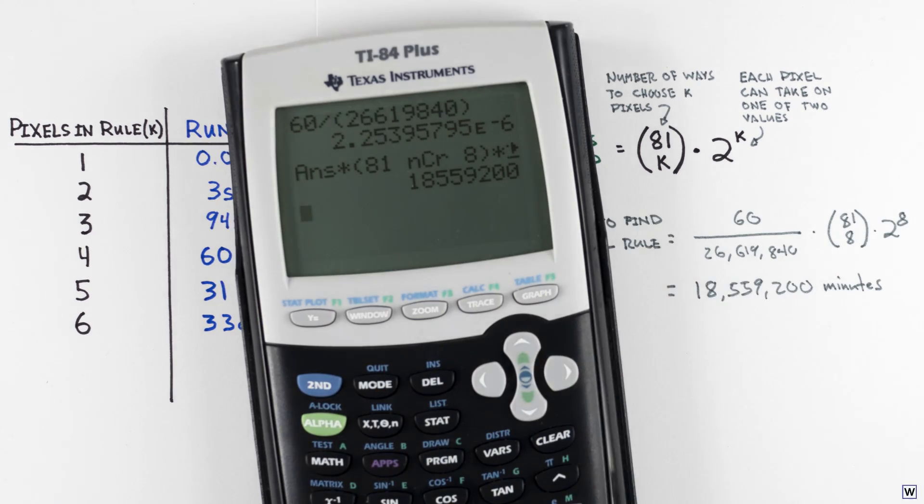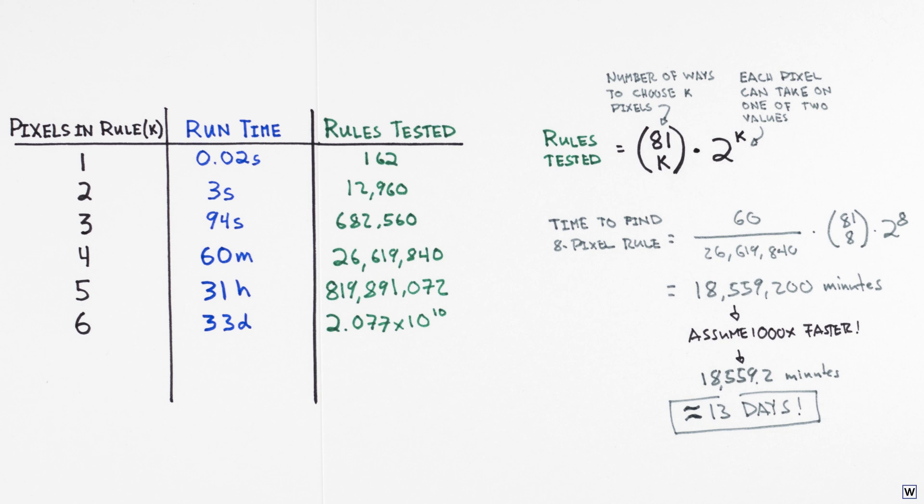Even if our code ran a thousand times faster, it would still take around 2 weeks to find the best 8 pixel rule. So it's not just that our particular implementation of our learning algorithm is slow. There's something more fundamental about our approach to learning from data that simply falls apart as we increase k.